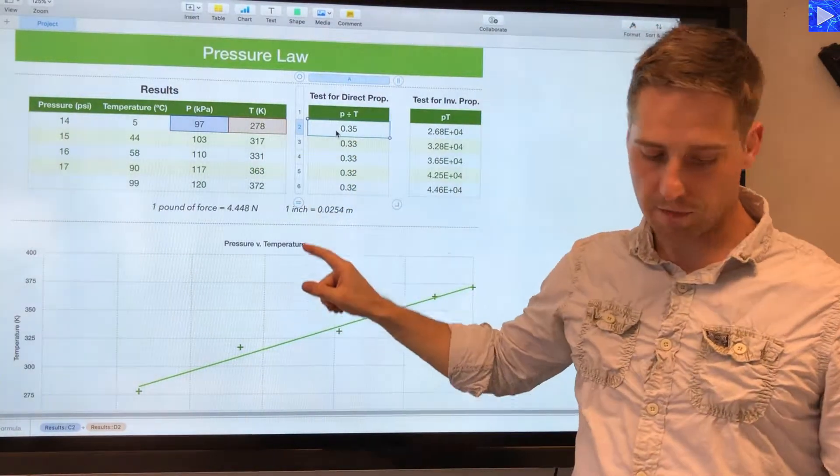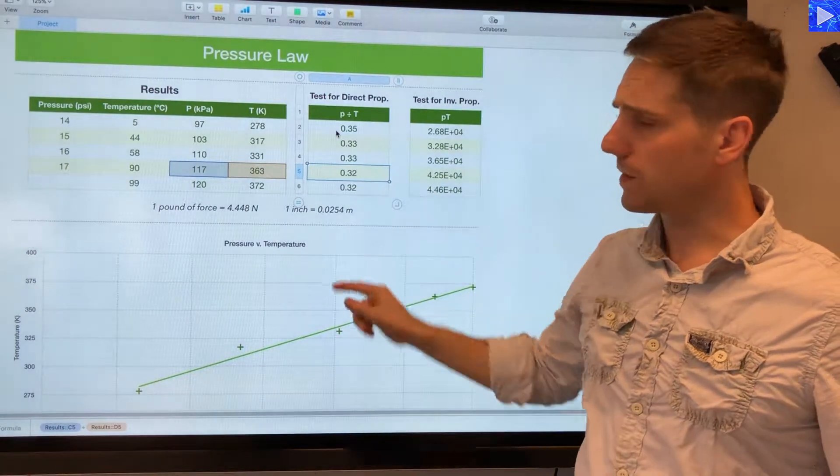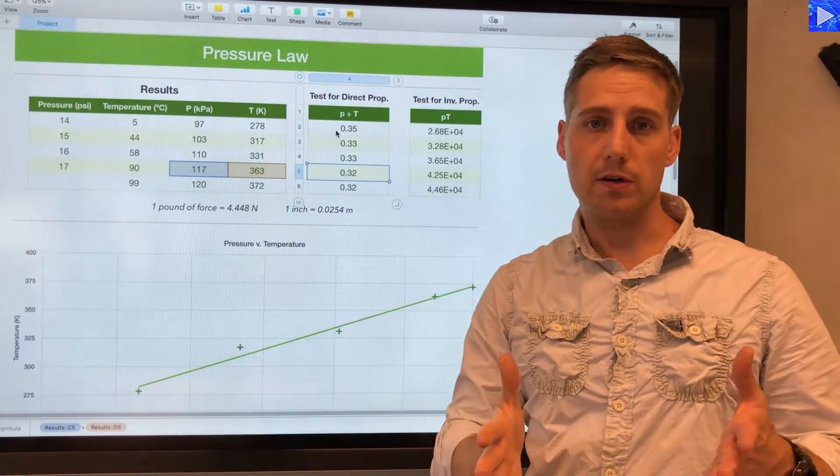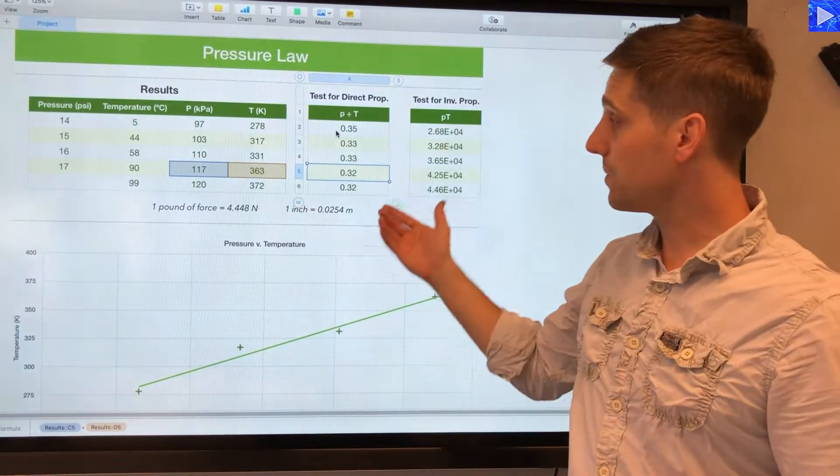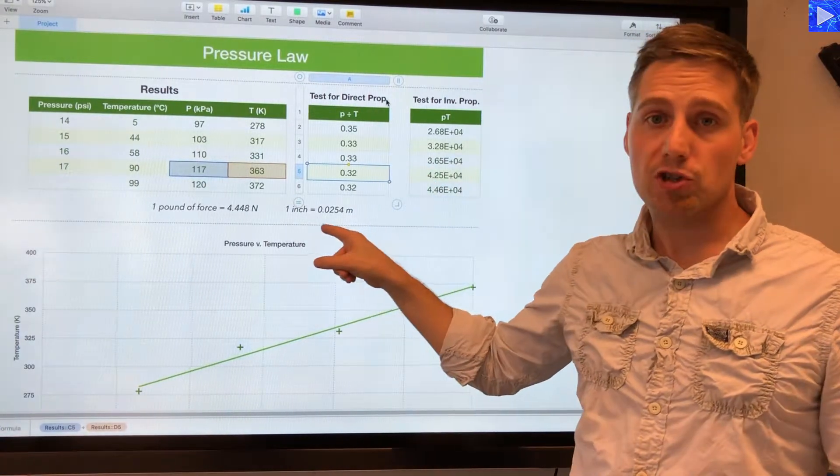What you can see I'm doing here is I'm dividing this pressure value by this temperature, and then I repeat that calculation for each row of data. If I get the same value for all of the rows of data, then there is a directly proportional relationship here. You can see it's a bit ambiguous. They are very close together, however there is a bit of a downward trend.